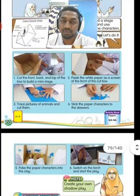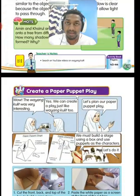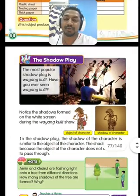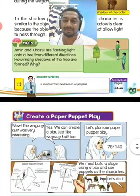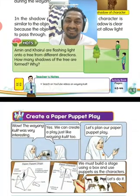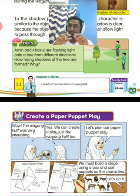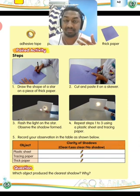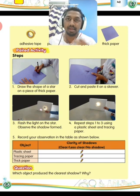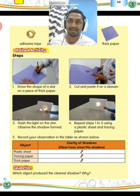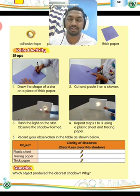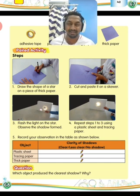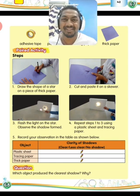That's what we have learned today: how a shadow is formed, the clarity of shadow, and how shadow play works. I ask you to create a paper puppet play at home. You can comment with other objects you know that are opaque, transparent, or translucent. If you like the video, subscribe, hit like, and share with your friends. Thank you, class — bye, see you in the next class!